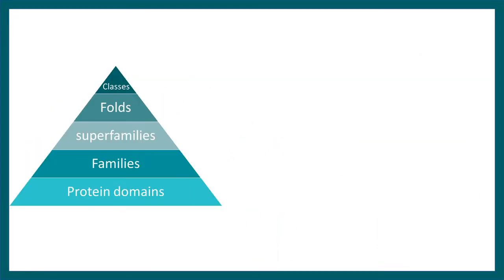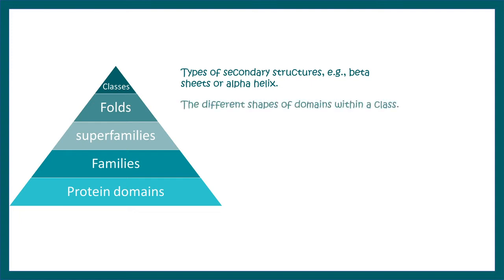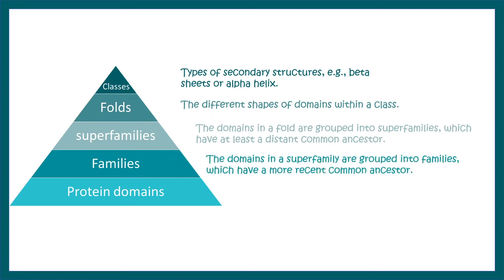Getting back to our discussion on SCOP, we discuss the hierarchies of classification: classes, fold, superfamilies, families, and protein domains. Let's look at the basis of these hierarchies. Classes tell us about the overall secondary structure of the protein, whether it is beta-pleated sheet, alpha helix, or a combination. Then comes fold—the different shapes of domain within a class. Then comes superfamily, where domains in a fold are grouped into superfamilies which have a distant common ancestor. If the common ancestor is more recent, they are classified as families. Lastly, domains are found in many proteins.